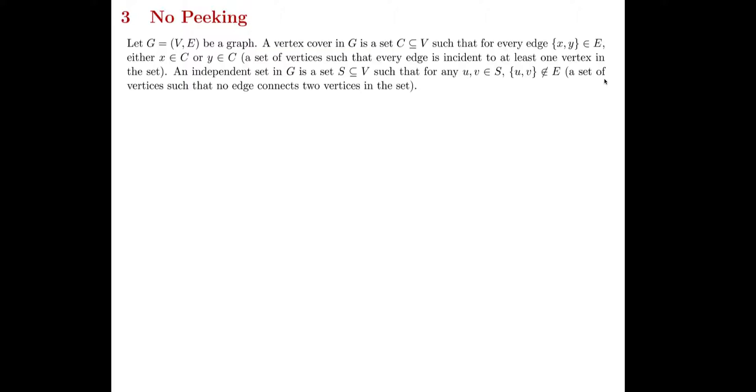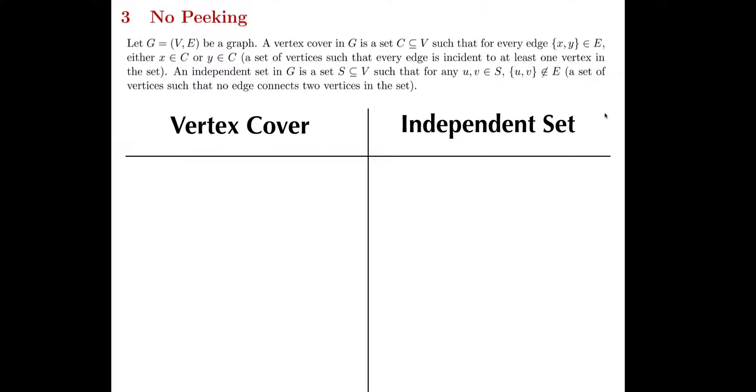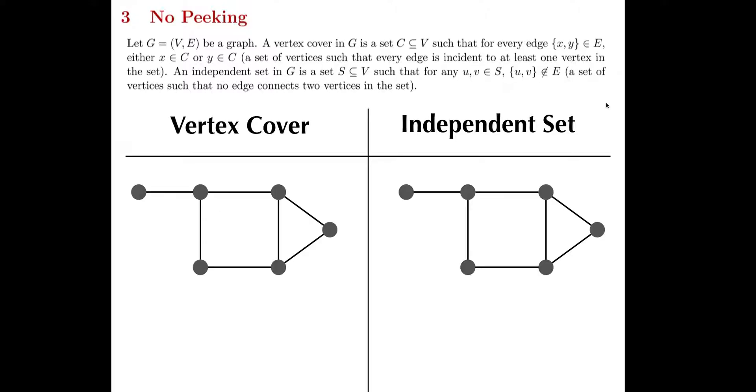This question begins by defining the notions of a vertex cover and an independent set. Take a second to read the formal definition, but let's familiarize ourselves with what a vertex cover and independent set is through a couple of examples. Formally, they're both subsets of the vertices, but they have different conditions around them. Let's look at what they look like on the same graph.